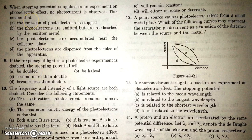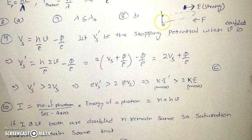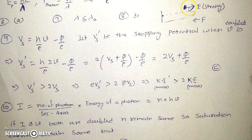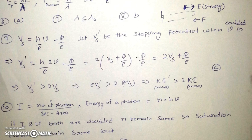When a stopping potential is applied in a photoelectric experiment and no photoelectric current is observed, it means electrons are ejected — since frequency exceeds the threshold — but due to the strong opposing electric field they cannot reach the other plate. The ejected electrons return to the emitting plate and are reabsorbed by it.